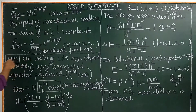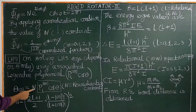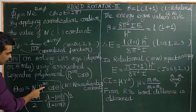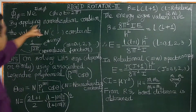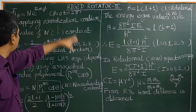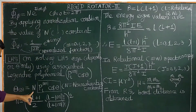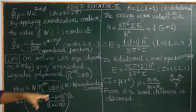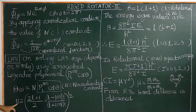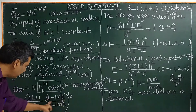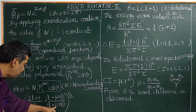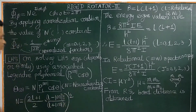On solving the left-hand side equation, the wave function theta is obtained equal to M times the Legendre polynomial function, where M is the normalization constant. By applying the normalization condition, the value of M is settled: M equals square root of (2L+1)/2 times (L minus |M|)! divided by (L plus |M|)!.